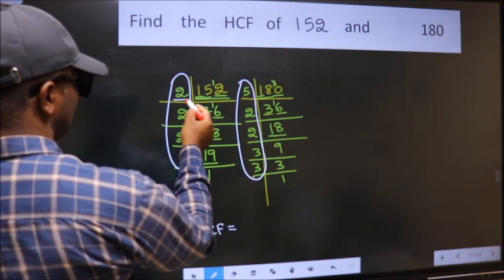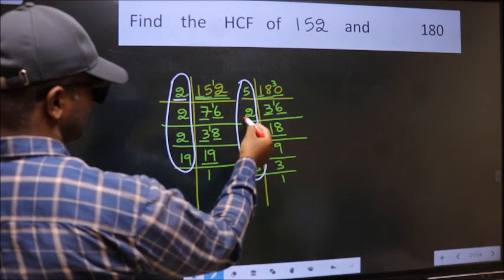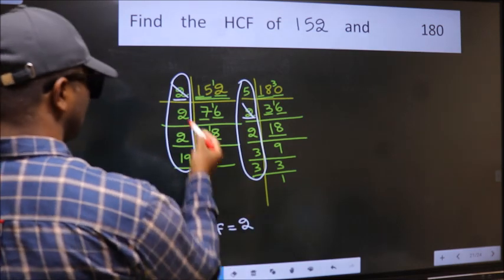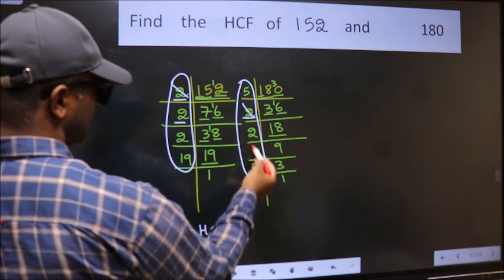Starting with the number 2. Do we have 2 here? Yes. So mark 2 right here. Next number 2. Do we have 2 here? No.